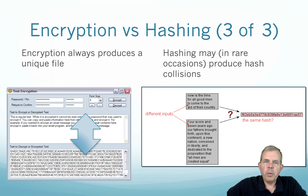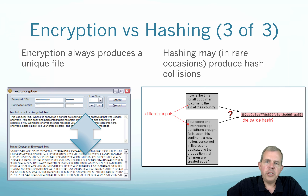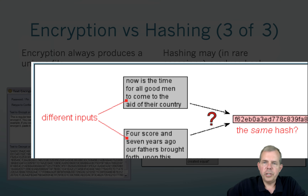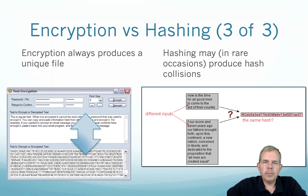A third difference is that encryption always produces a unique output, and hashing theoretically does too. However, if you have a hashing algorithm that is not very rigorous, there could be a same hash — called a collision — where different documents produce the same signature. It's very, very rare, but it's theoretically possible.